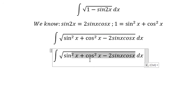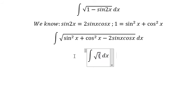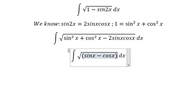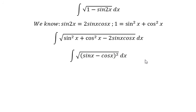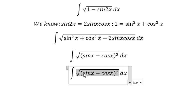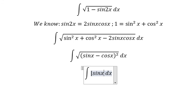So we get sin x minus cos x, everything to the power of 2. So this one we can put as the absolute value of sin x minus cos x. We know that this one can be positive